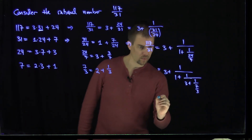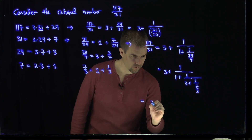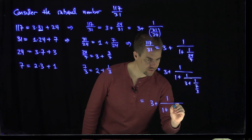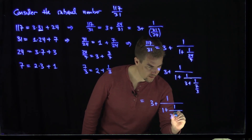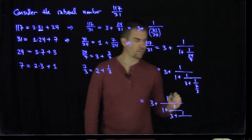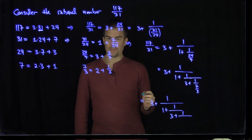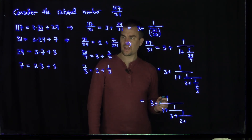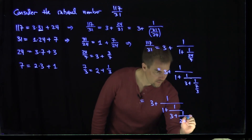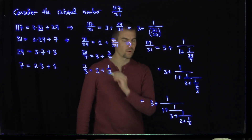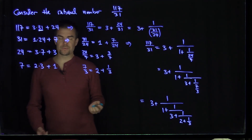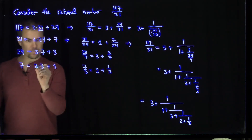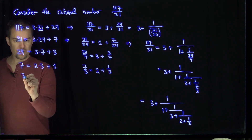So what we can do is keep this going. This is going to be 3 plus 1 over 1 plus 1 over 3 plus 1 over — and now I'm going to have 2 plus 1 third. And this is where the process stops, because if I try to do the same thing over here, the process will stop when I get to 3 and 1.